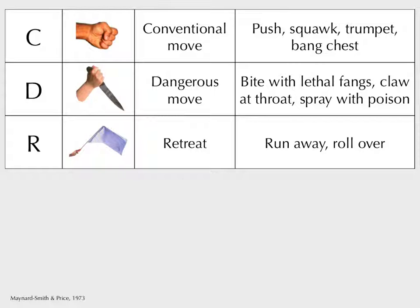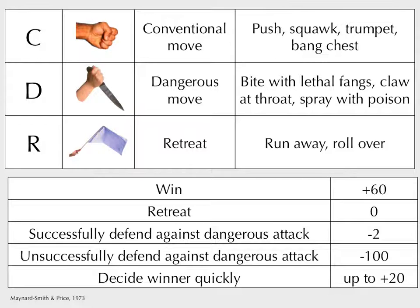We can think about strategies combining these moves. 'Dove' — always retreats, won't win contests. Something that always uses conventional moves. Something that always uses dangerous moves. You can see which strategy pays off. Like the old game: if you win, plus 60; retreat, zero; defend against a dangerous attack and get nipped, negative cost; unsuccessfully defend, negative 100, game over. There's also a cost to continuing the contest — you're not eating, not getting other mating opportunities.